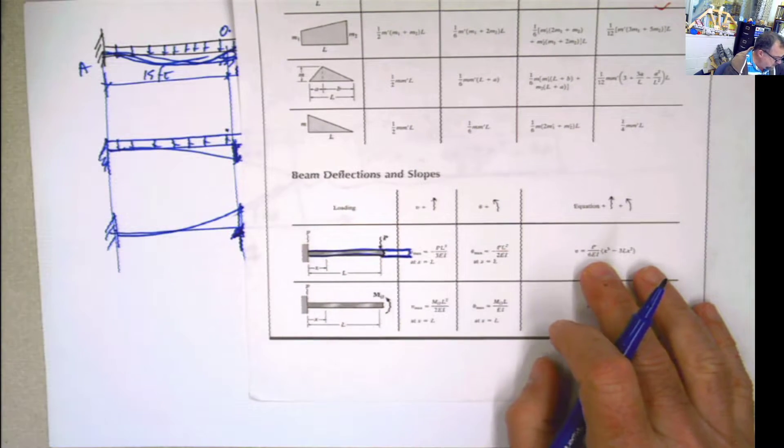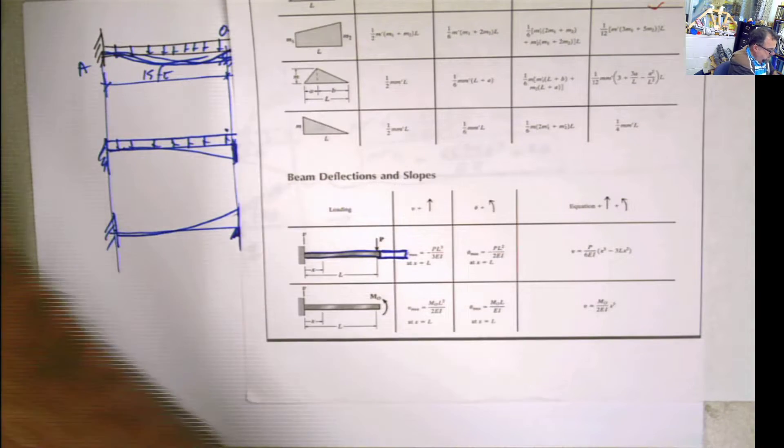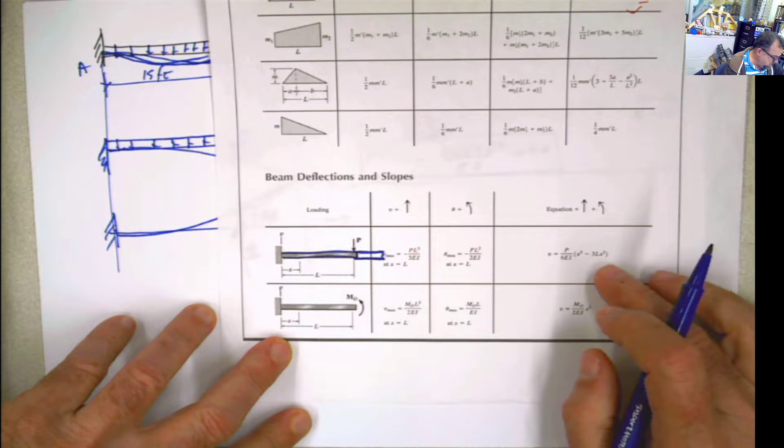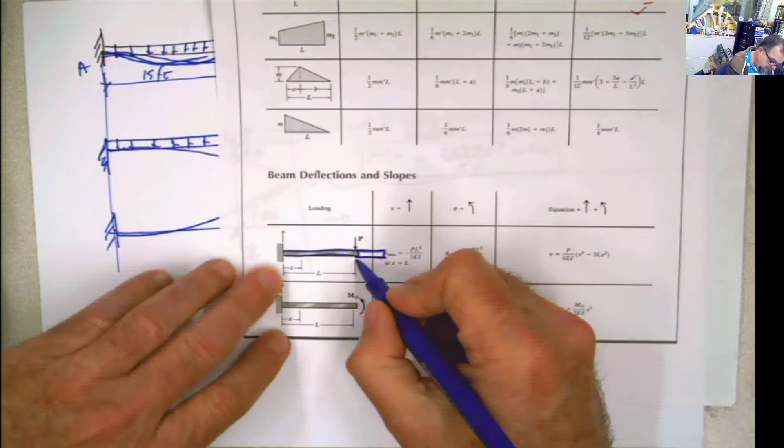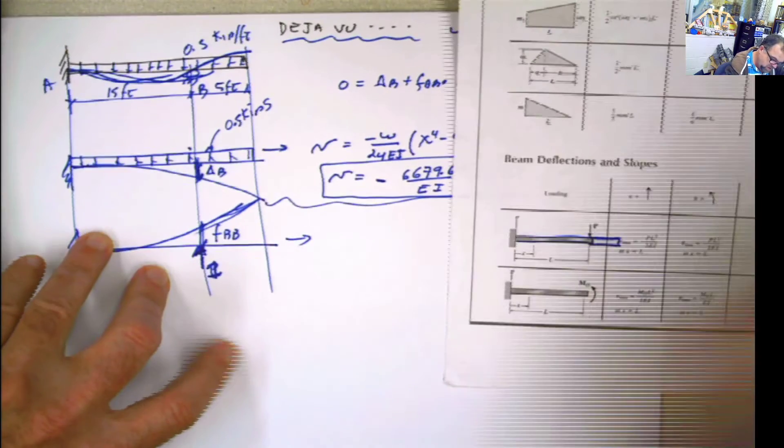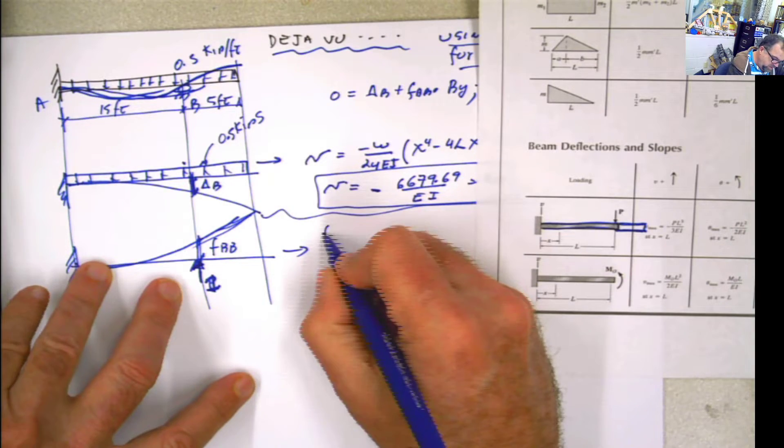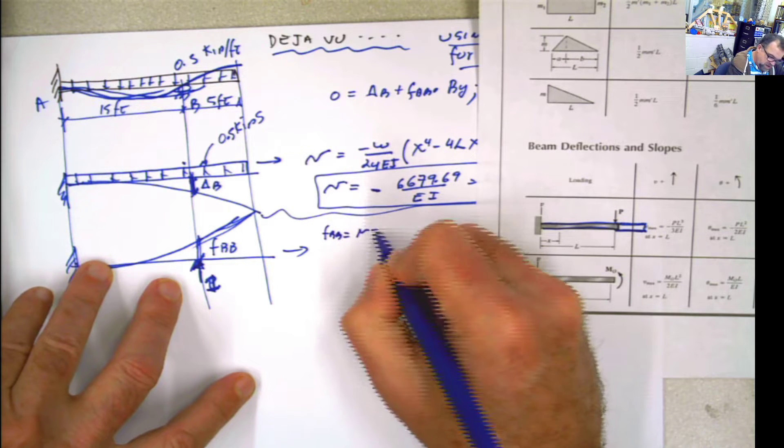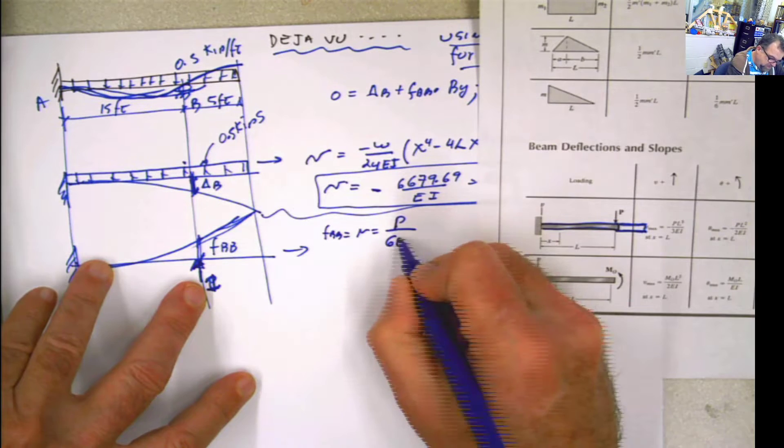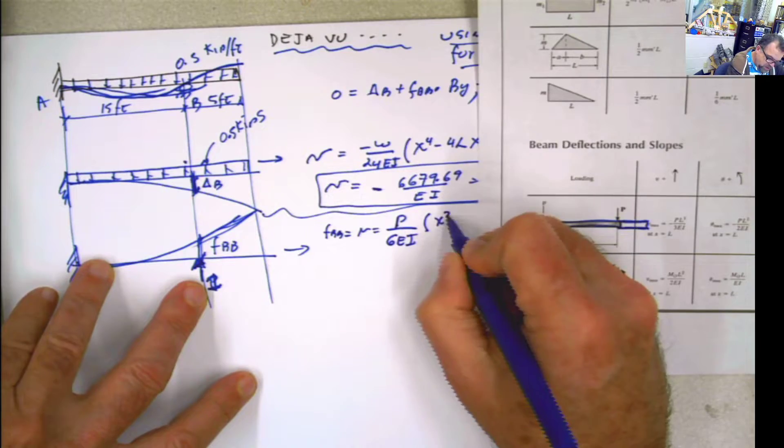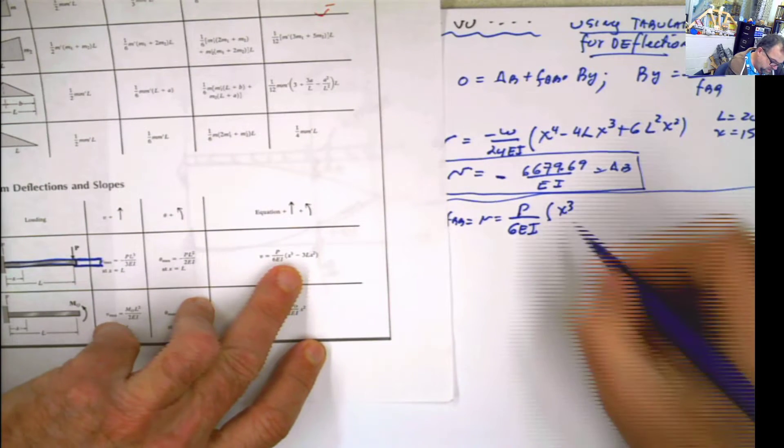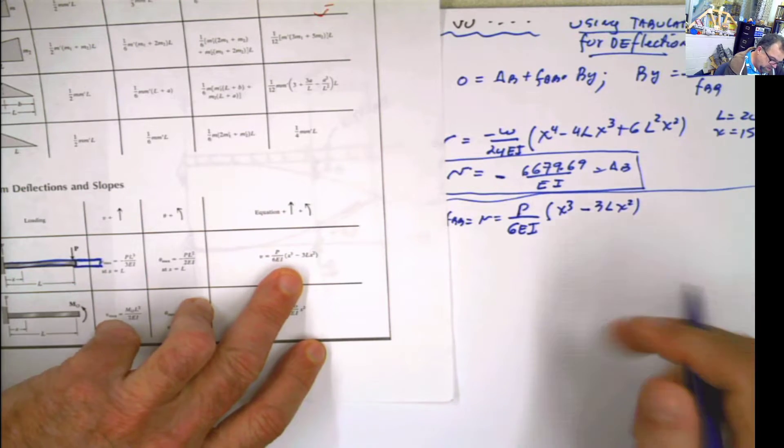So basically, I can use the same equation that I used, which is this equation. But x is going to be 15. And l is going to be 15 also, if I use this equation. So if I use this equation, be careful. That's the only thing that you have to be careful. Your FBB is going to be equal to p, which is 1. I'm going to put the equation first. EI x to the third. I'm just copying, guys. I'm just copying this.